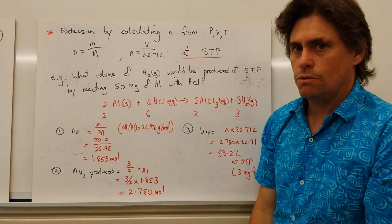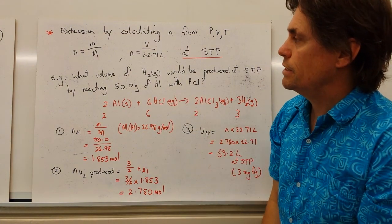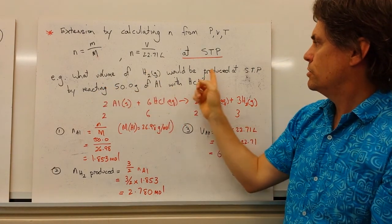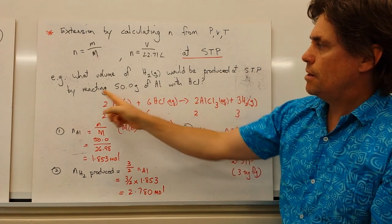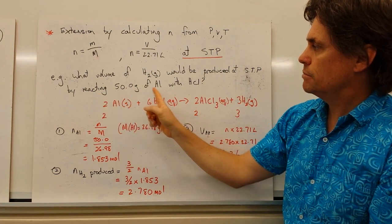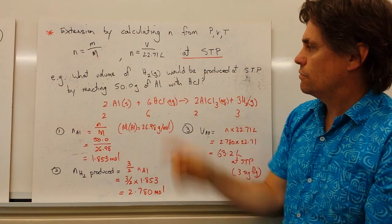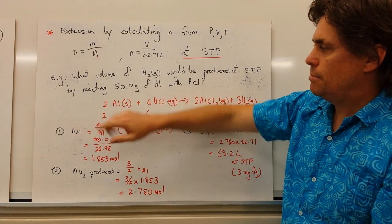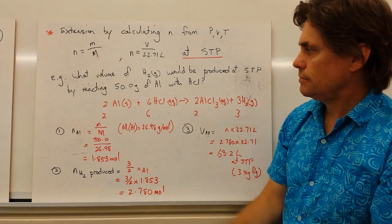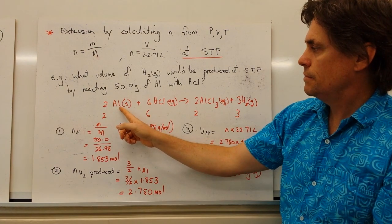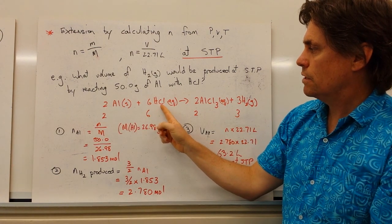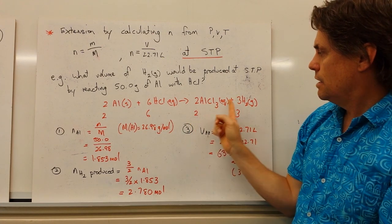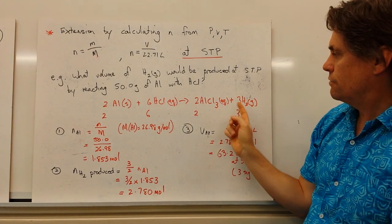So let's try and apply this to a question. We're asked what volume of hydrogen gas would be produced at STP by reacting 50.0 grams of aluminium with hydrochloric acid. So the first thing we need to do is write out a balanced equation. So I have two moles of aluminium reacting with six moles of hydrochloric acid to give us two moles of aluminium chloride and three moles of hydrogen gas.